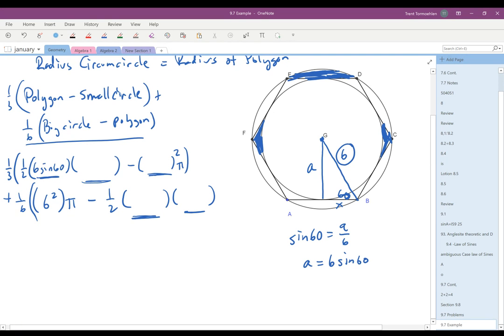And so I can put that in here for the apothem, six sine 60, six sine 60, six sine 60. So now you can see how close I am to being done. All I need to know is the perimeter.